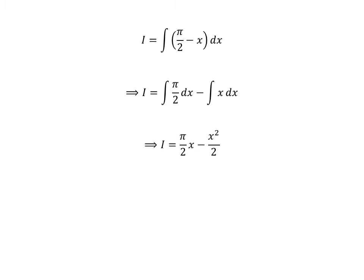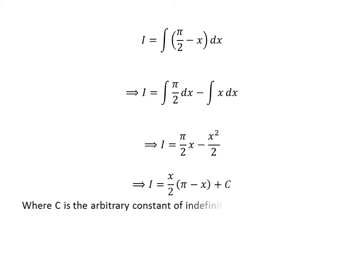These are simple integrations. As pi/2 is a constant, the integration of pi/2 is pi/2 times x, and the integration of x is x squared upon 2. Taking the common factor x/2 out, we get I is equal to x/2 times (pi minus x), plus C, which is the arbitrary constant of the indefinite integral.